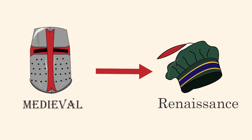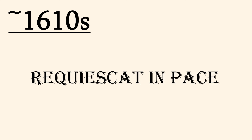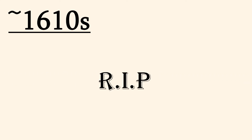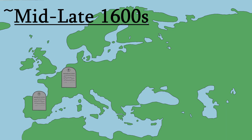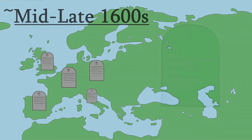From the medieval period to the Renaissance, Requiescat in pace was still used predominantly by the Roman Catholic Church, but also started to gain popularity with other sects of Christianity as well, and was used in different languages, like French, Italian, and English. The first time Requiescat in pace was abbreviated as RIP was around the 1610s, and by around the mid to late 1600s, the phrase started to gain traction in Western Europe, due to it having a religious connotation as a prayer for the deceased, and being a respectful phrase to honour the dead.